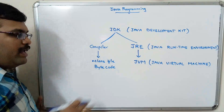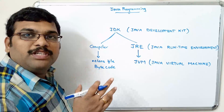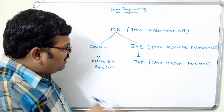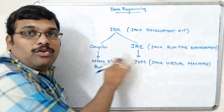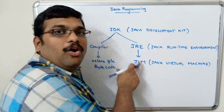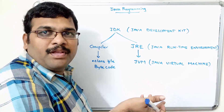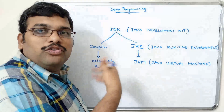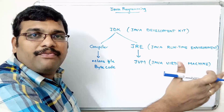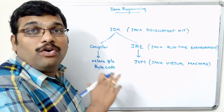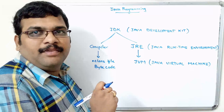In C language, after compilation the object code is generated and that object code is directly given to the operating system for execution. In Java, once the bytecode has been generated, this bytecode is given to the JVM, not to the operating system. The JVM is operating system dependent — each operating system has its own Java Virtual Machine — but the output produced from all different operating systems will be the same. That's why we call Java programming platform independent.